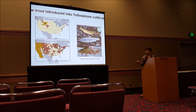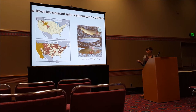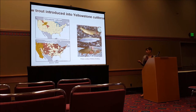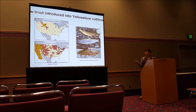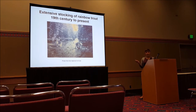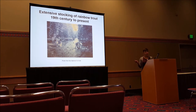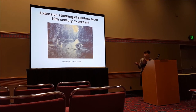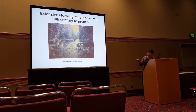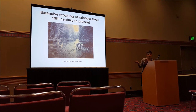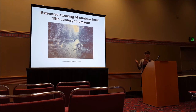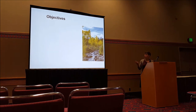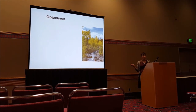Rainbow trout are known to hybridize with a whole bunch of cutthroat trout where they overlap — including this yellowstone cutthroat rainbow trout hybrid caught by our lab undergraduate. This process of rainbow trout introduction is really quite impressive. There's been extensive stocking of rainbow trout throughout the world from the 19th century to the present — here you can see old-fashioned milk jugs being used to dump trout into a stream.